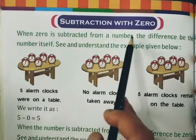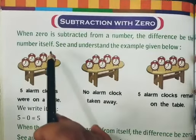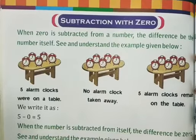When zero is subtracted from a number, the difference is the number itself. See and understand the example given below.